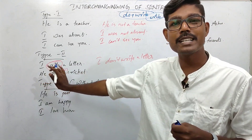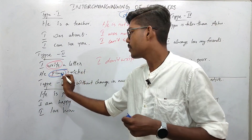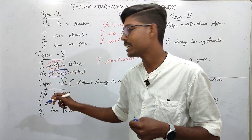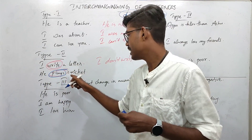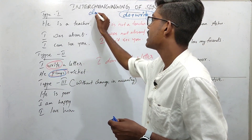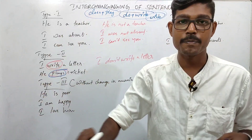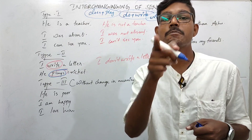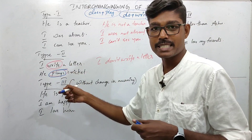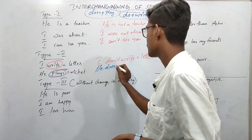The second example: 'He plays cricket.' Here the main verb is 'plays.' We split it: does + play. 'Plays' is singular, so we use 'does.' Therefore: 'He doesn't play cricket.'